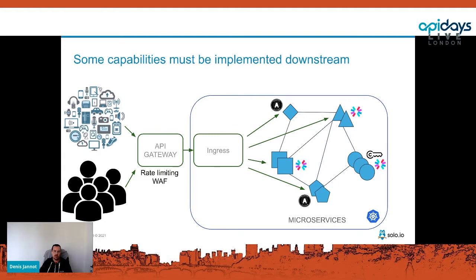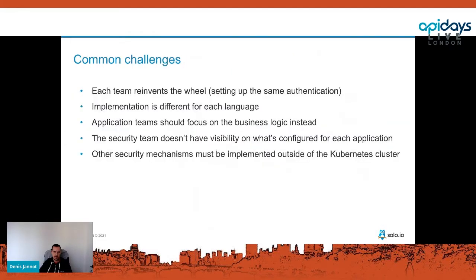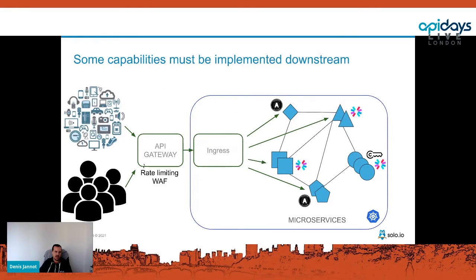If every application is configuring its own authentication and authorization mechanism in a different way, it's very difficult to know what's going on. Some mechanisms also need to be configured outside of the Kubernetes cluster, which is tricky because on one side you want to use a GitOps approach to deploy everything on Kubernetes as code, but then you need to configure an external component where you can't really use that infrastructure-as-code approach.